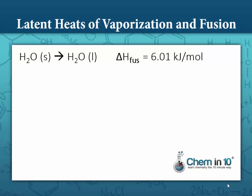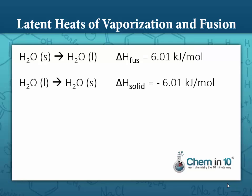The latent heat of fusion going from solid water to liquid water — from ice to liquid water — is 6.01 kilojoules per mole. That means to melt one mole of ice to water requires 6.01 kilojoules. If you had twice as many moles it would require twice the energy, or 12.02 kilojoules. To do the reverse — to freeze, going from liquid to solid — requires negative 6.01 kilojoules per mole, meaning it releases 6.01 kilojoules.